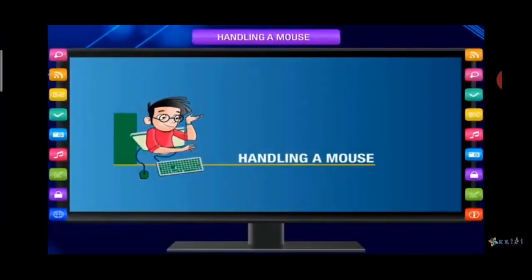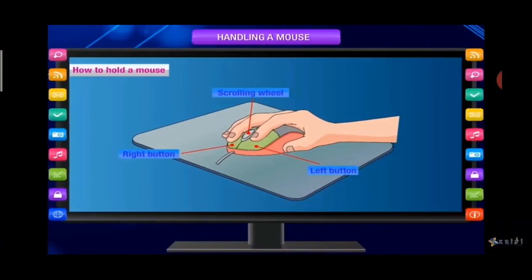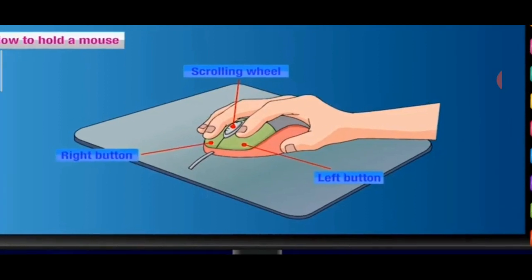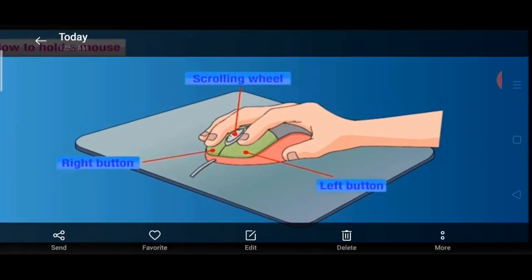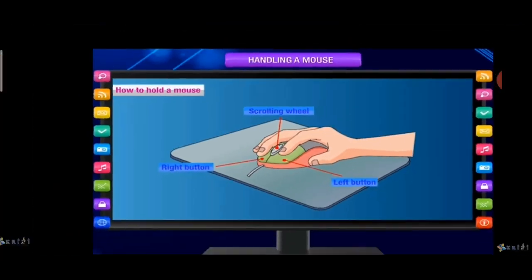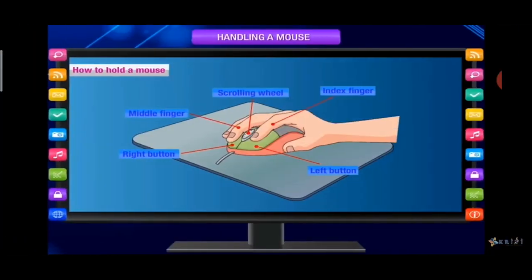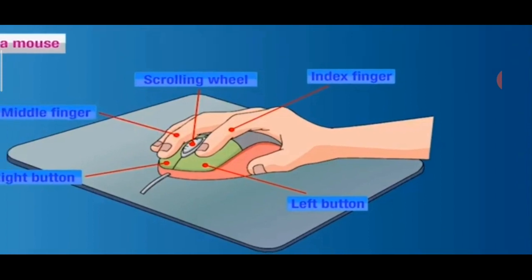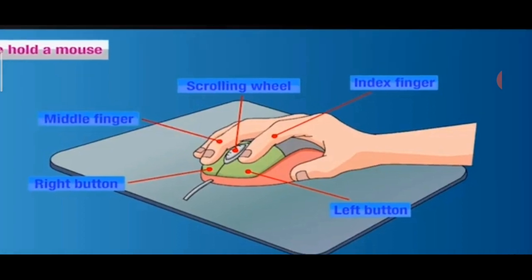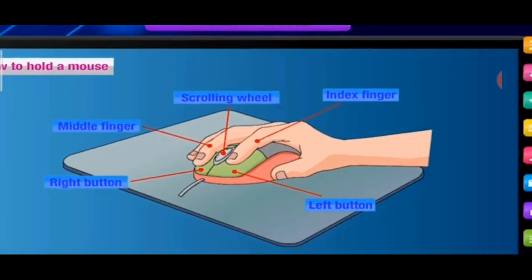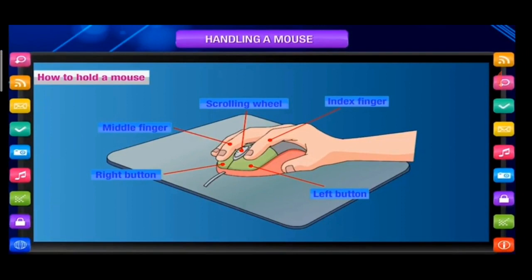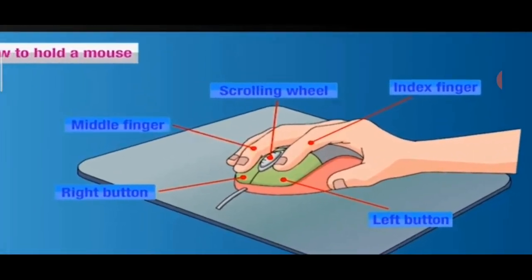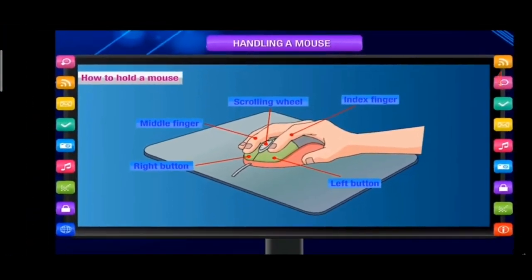Now, how to handle a mouse. We have the left mouse button, the right mouse button, and a scroll wheel in the middle of the two buttons. To hold the mouse, we have to put our index finger — that means our first finger — on the left mouse button, and our middle finger on the right mouse button. This is how we hold the mouse so that we can move it easily.